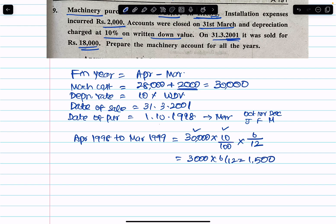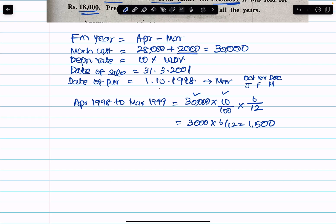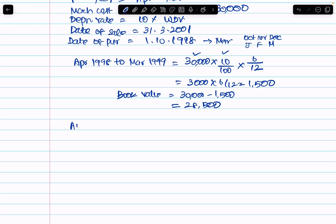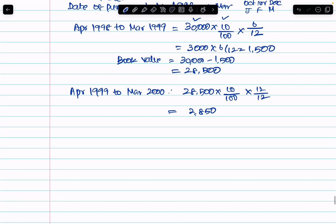So depreciation for Year 1 equals $30,000 into 10% into six by twelve, which equals $1,500. Therefore the opening book value of $30,000 minus $1,500 depreciation gives a closing book value of $28,500. For the second financial year, April 1999 to March 2000, depreciation equals $28,500 into 10% into 12 by 12, which equals $2,850. Closing book value becomes $25,650.